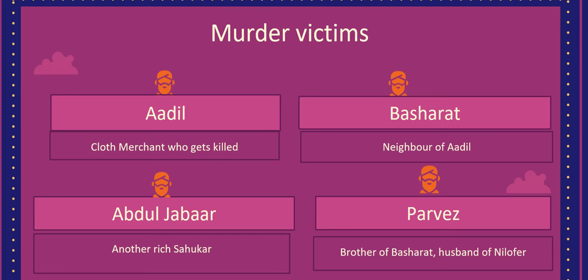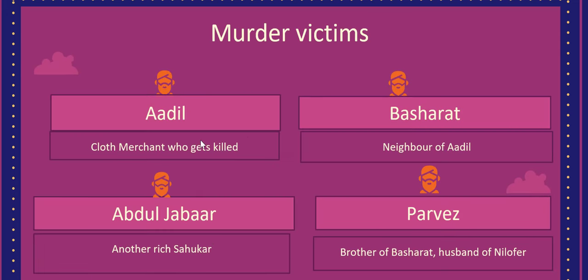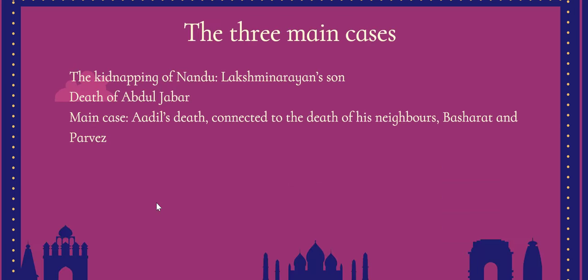There are four murder victims in the novel. The first is Adil Khan, a cloth merchant who is killed. His neighbor Basharat also dies — notably, Adil had earlier lived in a different house and had shifted, and that shifting of houses is important to how the novel progresses. The next person to die is Parvez. There is also the death of Abdul Jabbar, which is actually a separate case — not related to the deaths of Adil, Basharat, or Parvez.